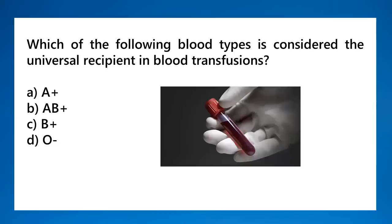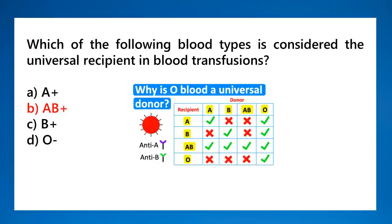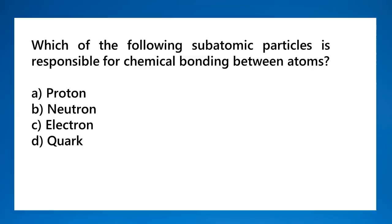Which blood type is considered the universal recipient in blood transfusion? That is AB positive — it can receive all blood types. The universal donor is type O negative, which can donate to all blood types. In the blood type compatibility diagram, AB receives from everyone (all checks), and type O donates to everyone (all checks on the donor side).